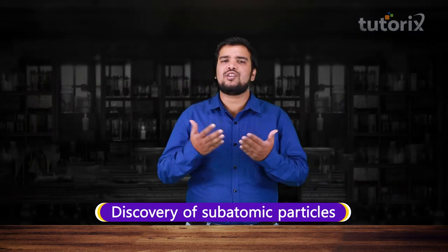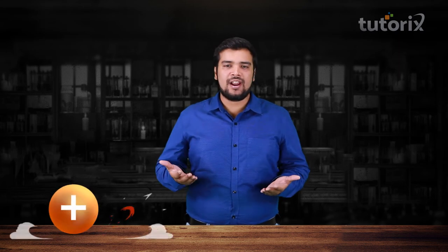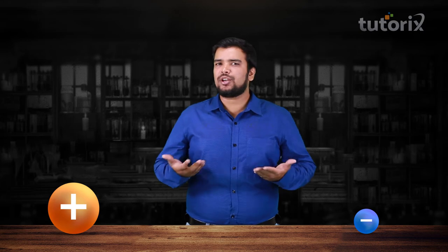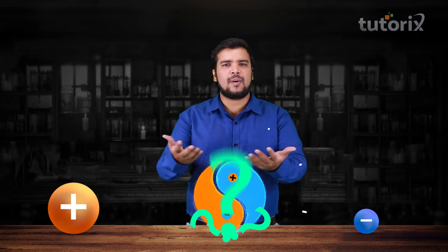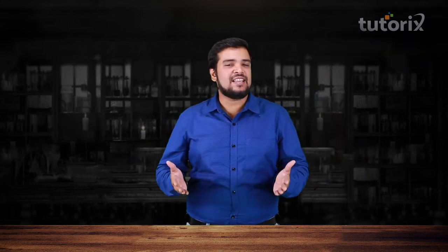After the discovery of the subatomic particles, scientists knew that atoms are made of two entities—one which is positive, the other which is negative. But they wanted to know how are these particles arranged inside an atom? Does the answer lie in the structure of the atom? We will see in the next video.